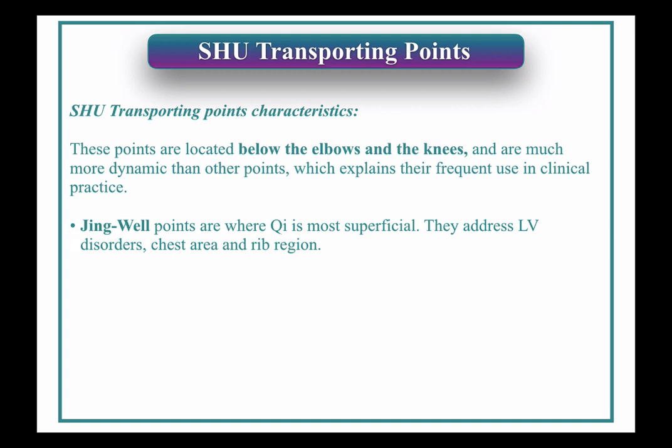They are the Jing Well points. The Jing Well points are located at the tip of the toes or the tip of the fingers, except for Kidney 1, which is on the sole of the foot. Most of them are going to be at the tip of the fingers or toes. Those points are where Qi is most superficial. They address liver disorders and chest and rib region disorders — that's their main function.